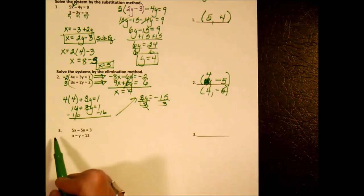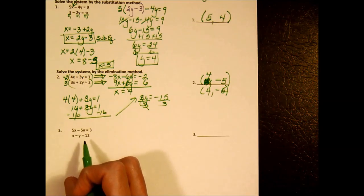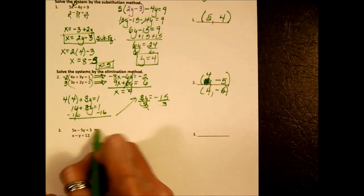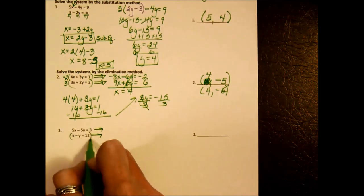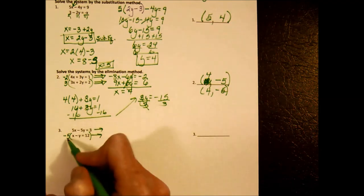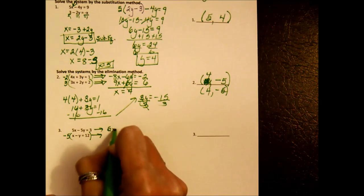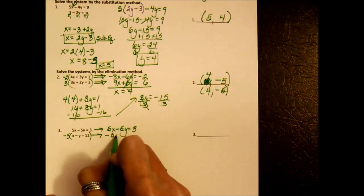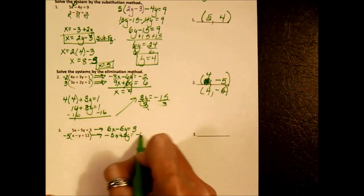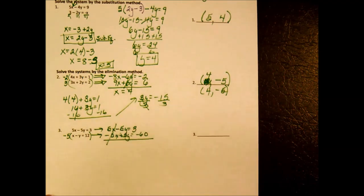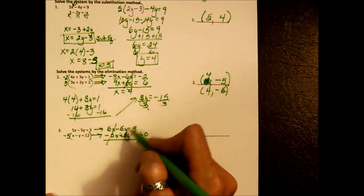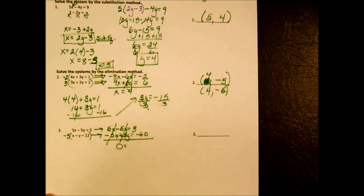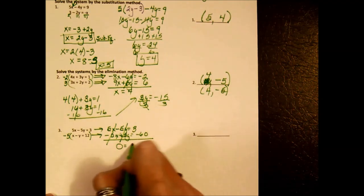Example 3 also says to solve by the elimination method. I'd like to eliminate the x's, so I'll multiply the bottom equation by negative 5 — that makes the two x coefficients opposites. My top equation doesn't need to be multiplied. The bottom one becomes negative 5x plus 5y equals negative 60. The x's make a 0, and oddly so do the y's. On the left-hand side all I have is 0, and on the right I have 3 minus 60, which is negative 57.